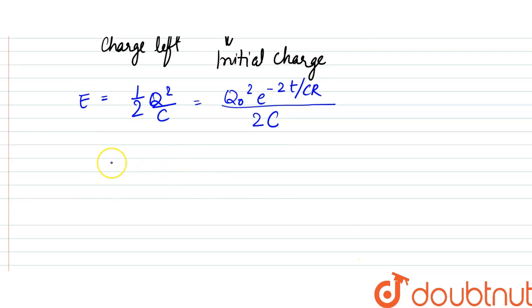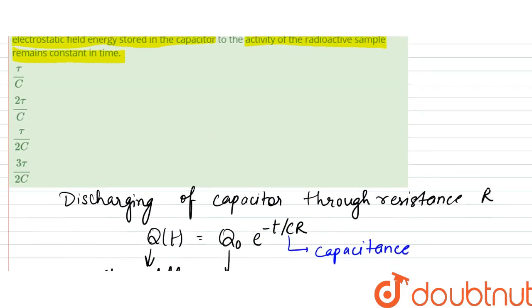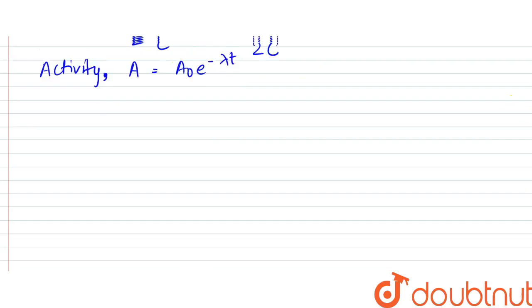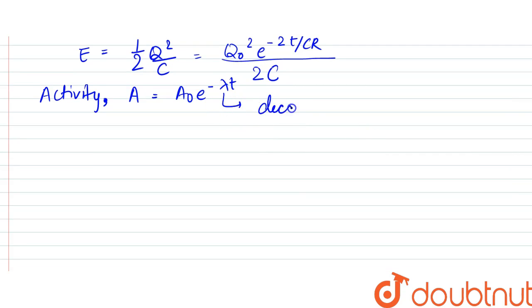Activity A would be equal to A₀e^(-λt). That would be the activity here. A₀ is the initial activity here and lambda is the decay constant.